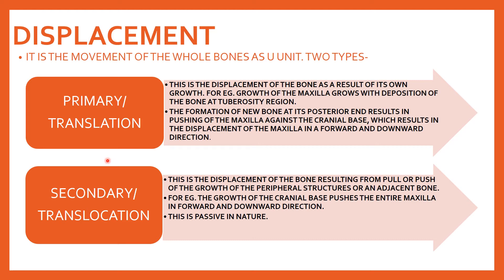Secondary displacement is displacement of the bone resulting from the pull or push of the growth of peripheral structures. For example, the growth of the cranial base pushes the entire maxilla in a forward and downward direction. There is no bone growth of the particular bone itself; because of other structures growing, they push the main bone. This is passive in nature.